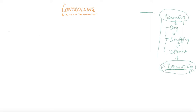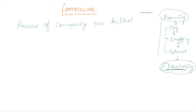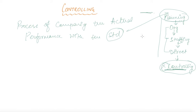Let us discuss controlling. Controlling is a process of comparing the actual performance with the standards. These standards, remember, are basically set at the planning stage.